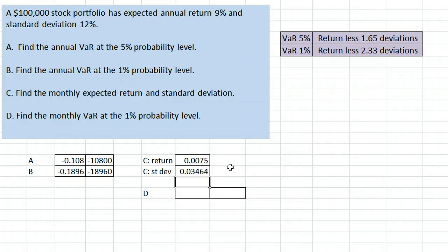The last question asks for a monthly VAR, so we will use these new values that we just found. For a 1% VAR, we will take the expected return here and subtract 2.33 times the standard deviation here. That gives about negative 7% and converting to dollars about negative $7,300.